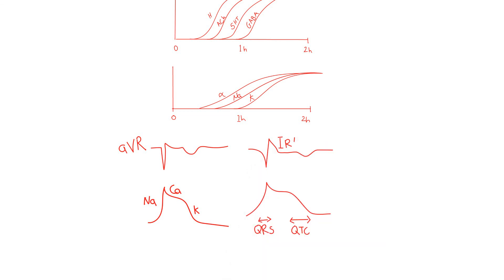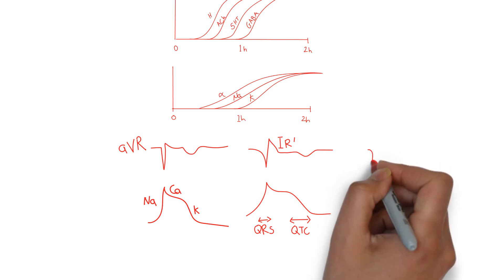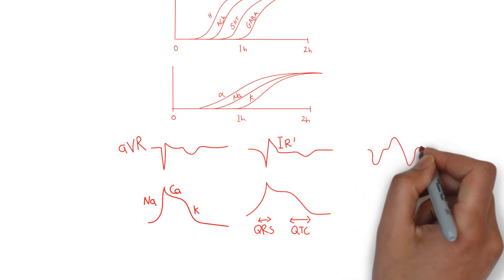Natively, the right bundle and the left bundle have different speeds of depolarization and repolarization, with the right bundle being slower. Very early TCA toxicities exacerbate this difference, giving the EKG an overall right bundle pattern. An elevated R in AVR greater than 3 mm or an RS ratio greater than 0.7 in TCA overdose can predict impending seizures.